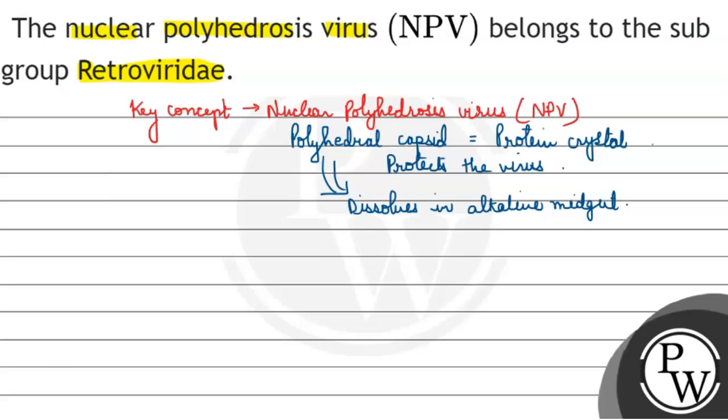Then, talking about the group. It falls in group one. Its DNA is a double-stranded DNA. Its family is Baculoviridae.